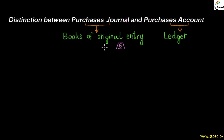When a business transaction occurs, it is recorded in a book of original entry. When that transaction is a purchase, it is recorded specifically in the purchases journal.